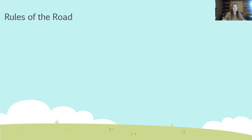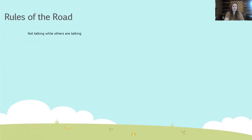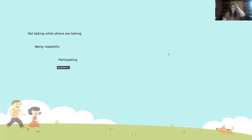Typically this would be something where we would write down some rules of the road. For those of you who just completed MAP or remember MAP, it's just some things we'd like to follow during this training: not talking while others are talking, being respectful, and participating. So those are just a few that we will keep in mind.